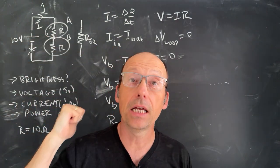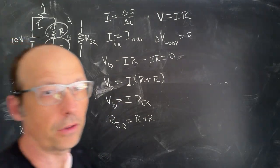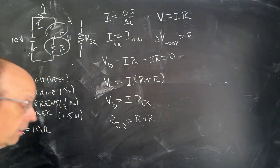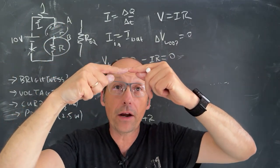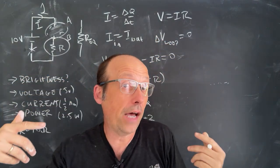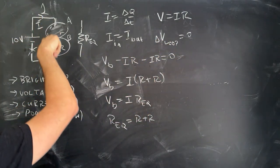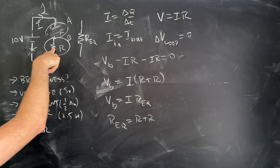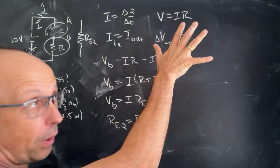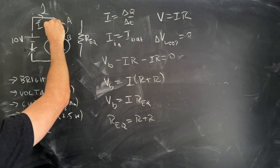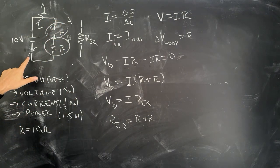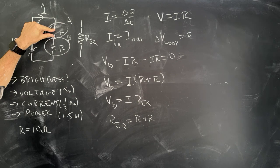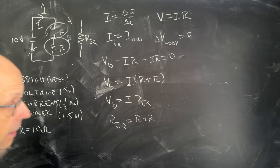There was one other question: what happens if one of the bulbs burns out? When an incandescent bulb burns out, that wire breaks and you no longer have a complete circuit. If the circuit is broken, the current is zero, so both bulbs go out if one burns out. The loop rule still works: going around the loop, 10 volts from the battery minus 10 volts across the gap equals zero.